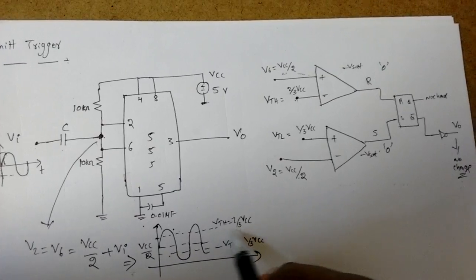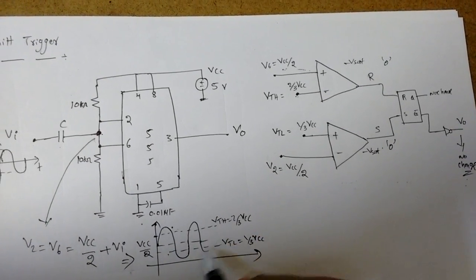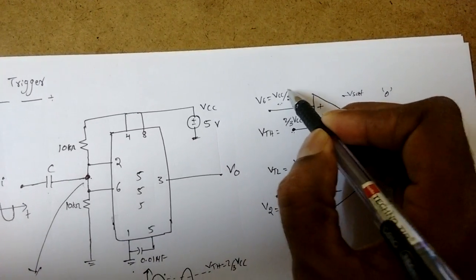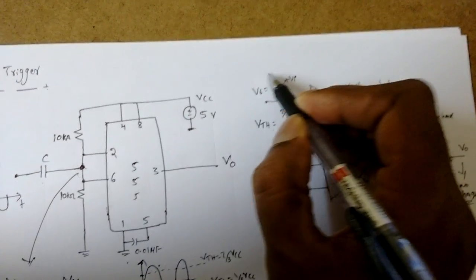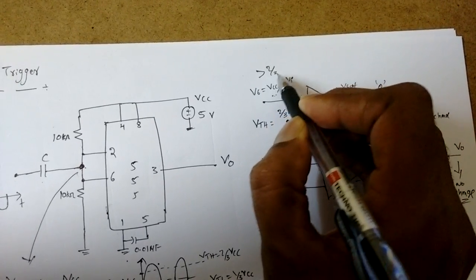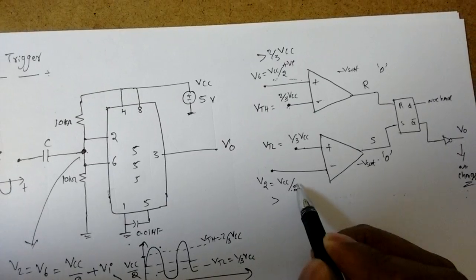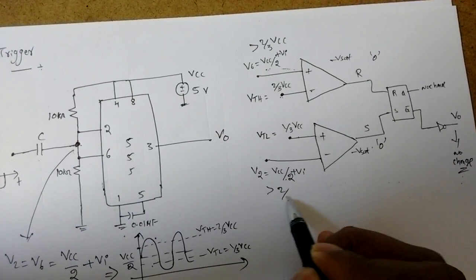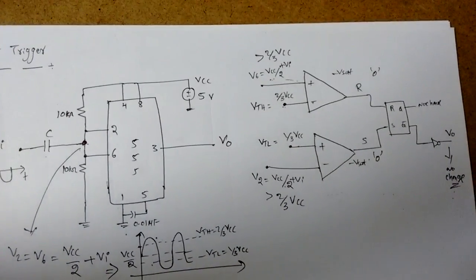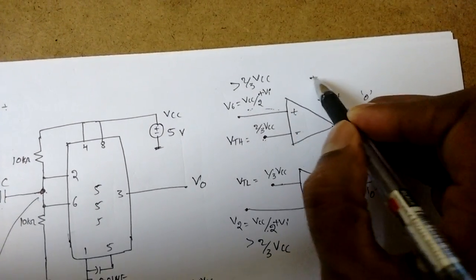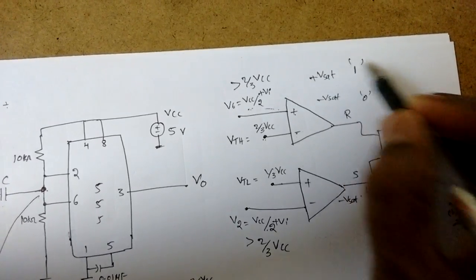Now the moment here the V2 or V6 is greater than 2 by 3 VCC due to this upon the application of the input signal - so there is some VI. By adding this, suppose if it is greater than 2 by 3 VCC, if it happens, similarly it also will happen plus VI greater than 2 by 3 VCC. Now what will happen we will see. The moment plus is greater than minus, it will become plus Vsat, that is logic 1.